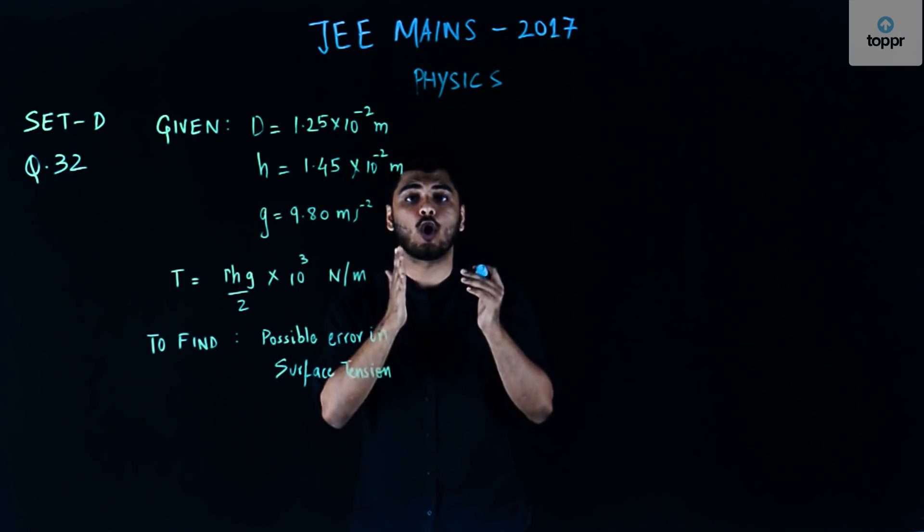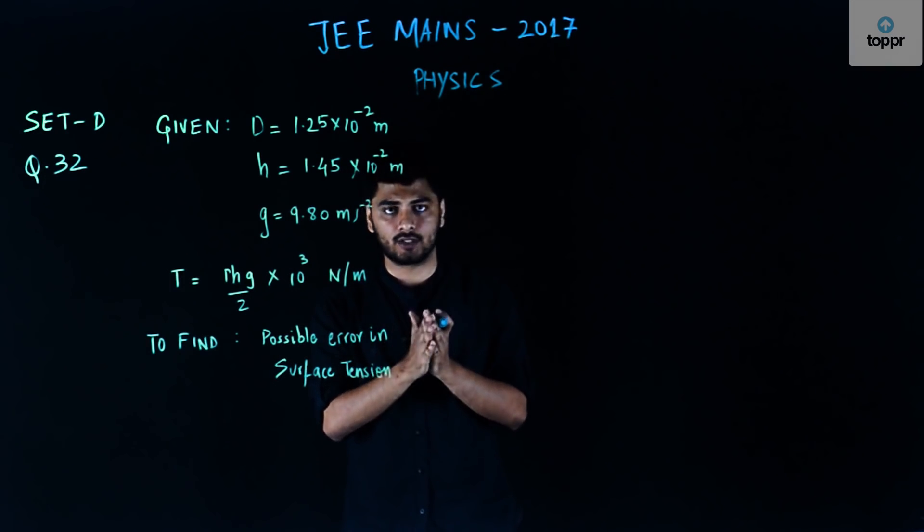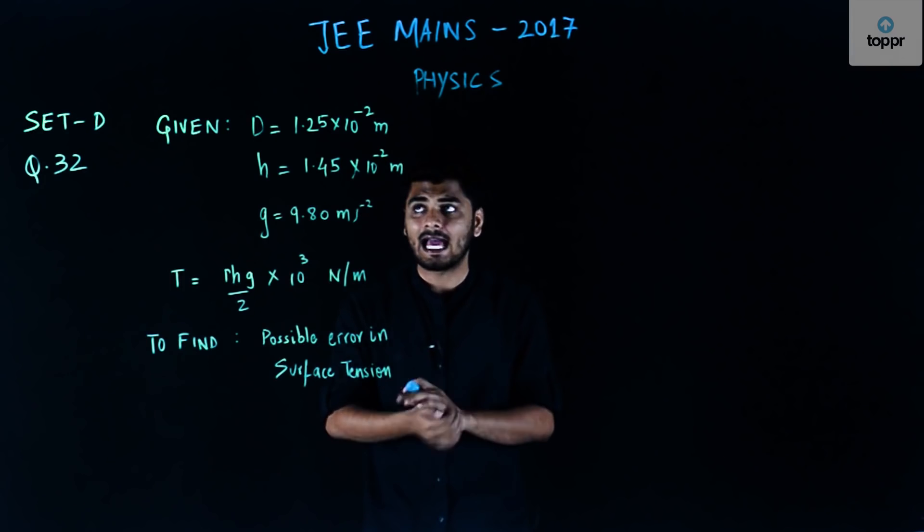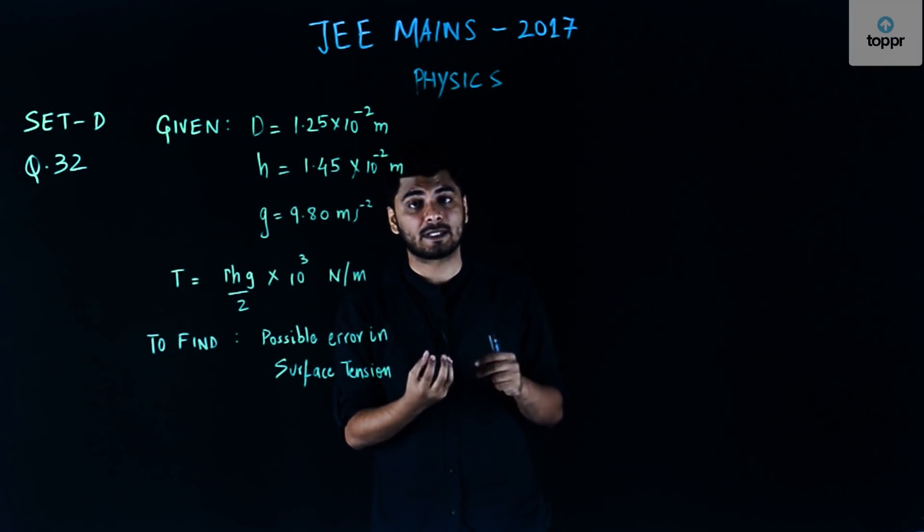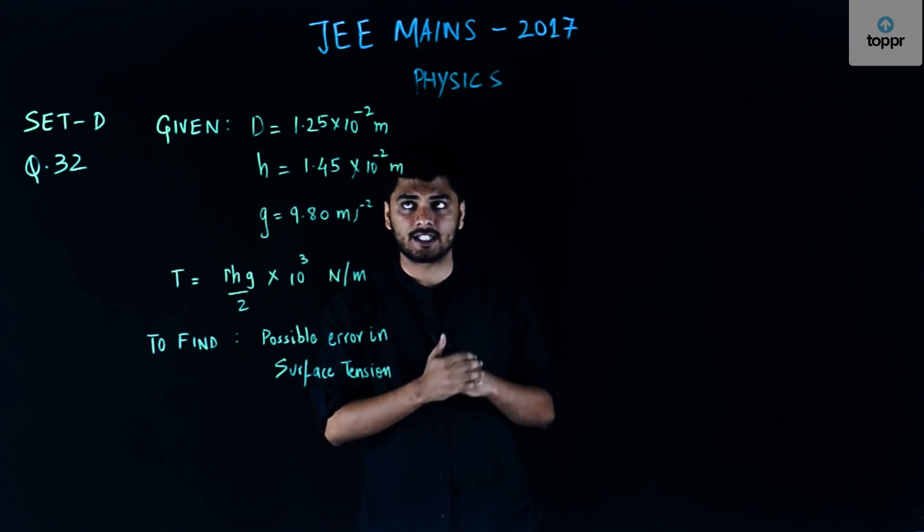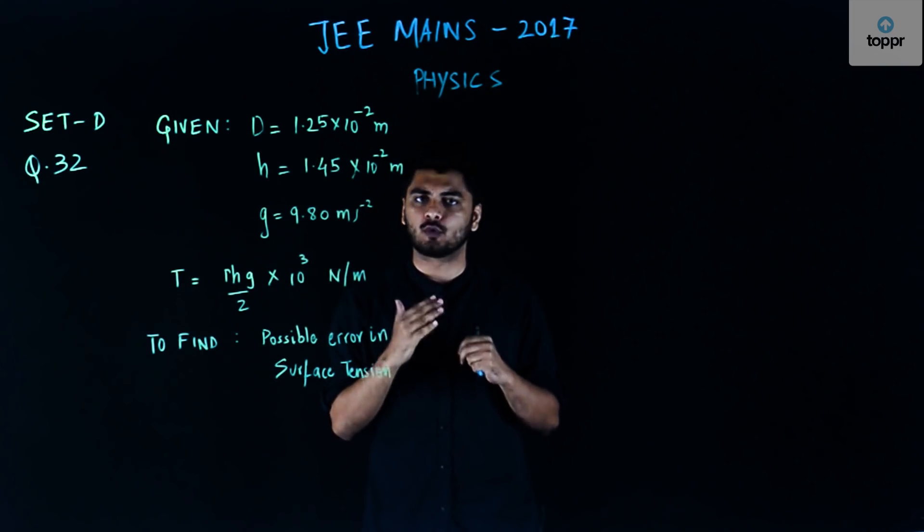In the question it has been given that in order to find the surface tension of water, an experiment was conducted and following were the readings. The diameter of the capillary in which the experiment was conducted was 1.25 × 10 raised to the power minus 2 meters.